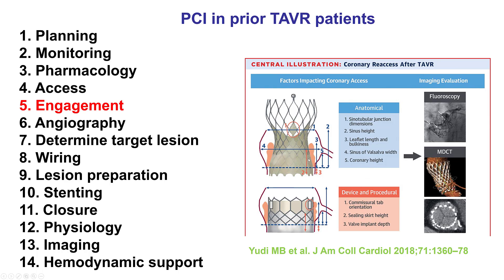Some other aspects of the patient's anatomy determine the difficulty of engaging. For example, the width of the sinus of Valsalva — the wider it is, the easier it is to engage the coronary arteries. Also, the higher the coronary ostia, the easier to engage. And the less bulky and the shorter the native coronary leaflets are, the easier it is to also engage the coronary arteries.